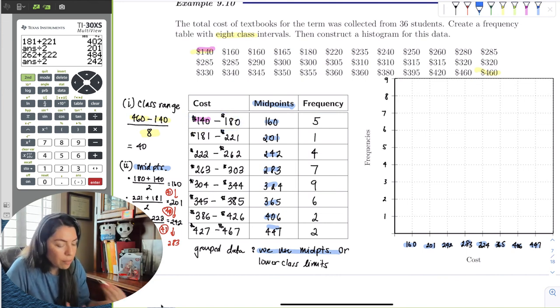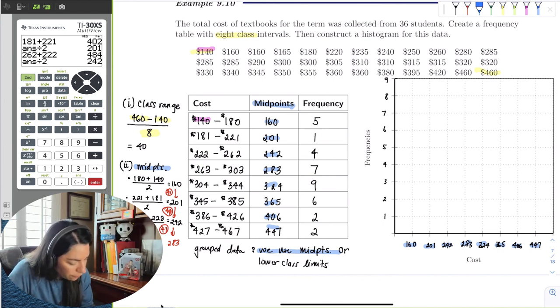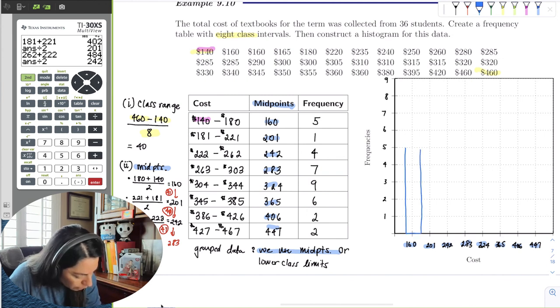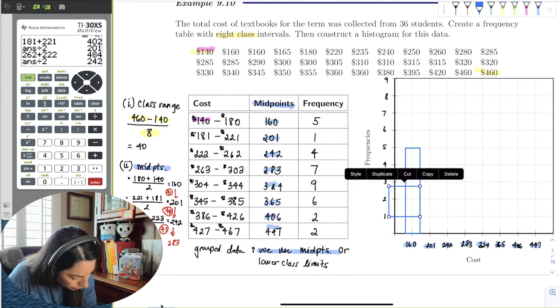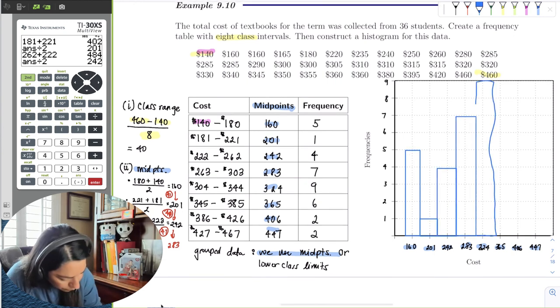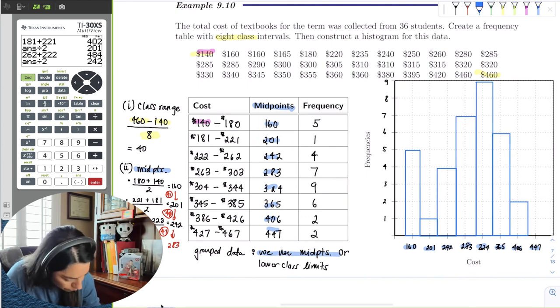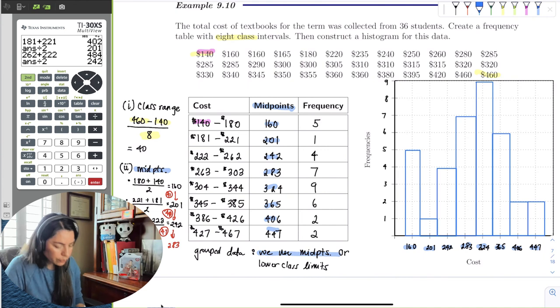So 160 had a frequency of 5. So then I would just draw a rectangle. They're going to be pretty narrow. The next class had only one student, so it's going to look like that. The 242 had 4 students. I hope you were able to do something like that. I did my best. So that's what the histogram looks like. And again, we can use lower class limits or midpoints. We will use midpoints here in this class.